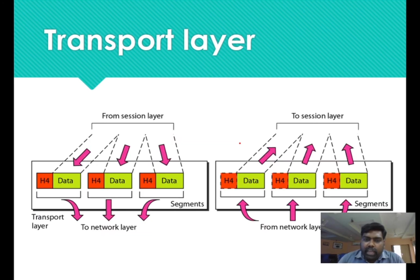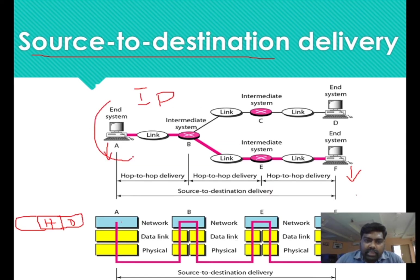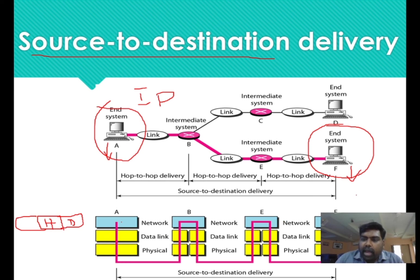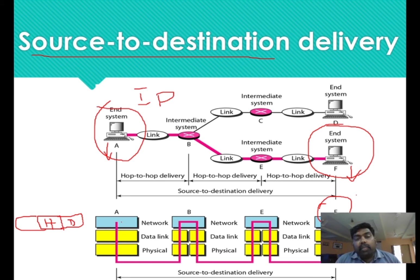Now I am going to explain with a particular example. System A is communicating with System F. So if you are trying to say the network layer, what type of system does this apply to? If the network layer does that service to the address, what type of addressing is assignable? The destination address assigned to System F is transmitted to F. What system is identified? Network is supported, but the original process identification is needed — system to system delivery is needed.